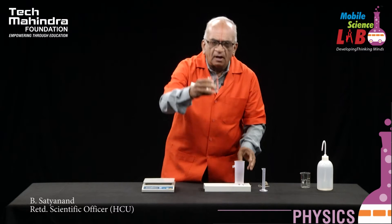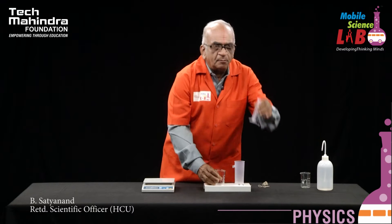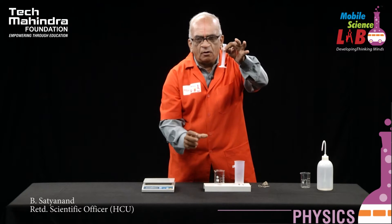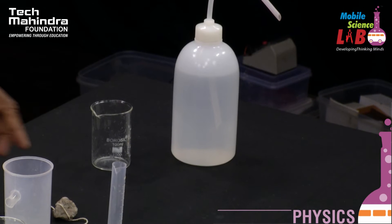Other things are all normal. There's a beaker and there's a measuring jar. We can find out the volume of the liquid with these.